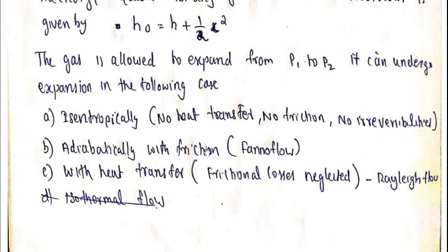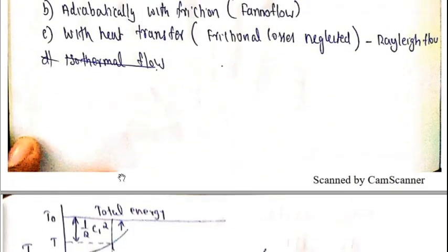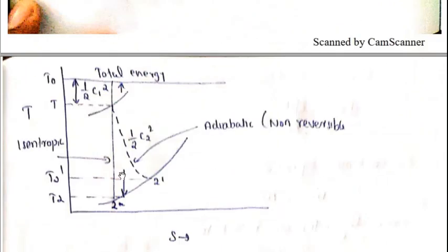In the next module, we have Fanno flow — adiabatic flow with friction. After that, we have flow with heat transfer. Then we have normal shock. In the normal shock module, there are two derivations. We have to do the structure, explanation, and questions for each.